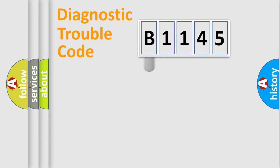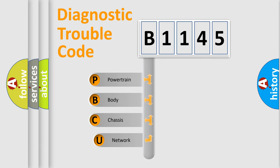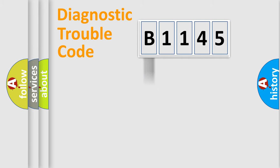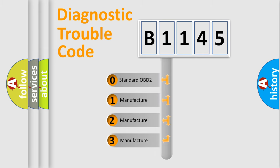Let's do this. First, let's look at the history of diagnostic fault code composition according to the OBD2 protocol, which is unified for all automakers since 2000. We divide the electric system of the automobile into four basic units: Powertrain, Body, Chassis, and Network. This distribution is defined in the first character of the code.